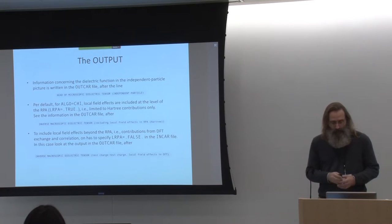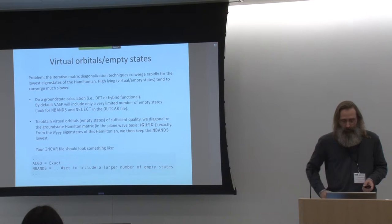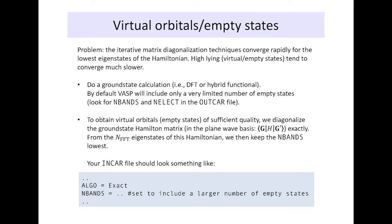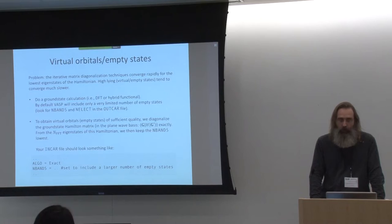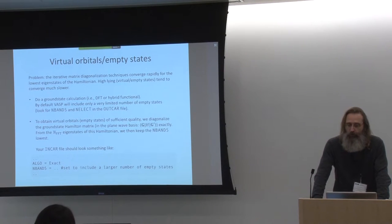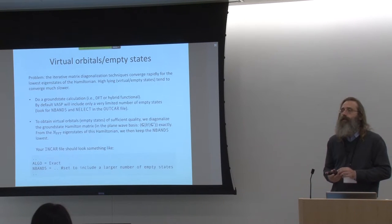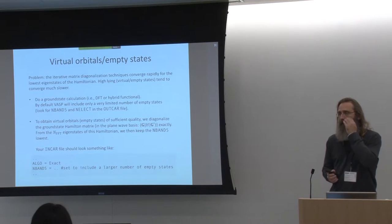There are a few practical points of importance to the computation of dielectric properties, and also very much of importance for GW calculations where we use these dielectric properties. We'll be using unoccupied states, and we use iterative matrix diagonalization to refine our states. This is very nice because we can get at the lowest states in our eigenvalue spectrum of our Hamiltonian matrix.